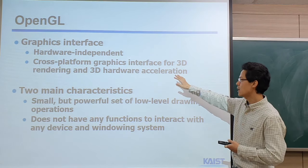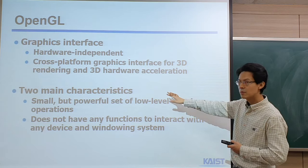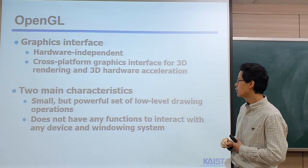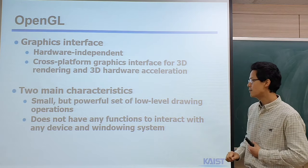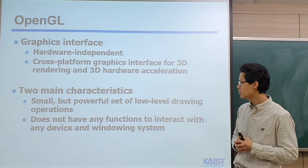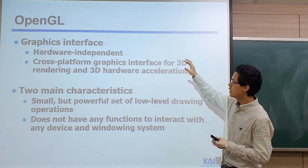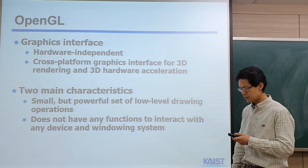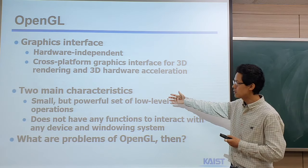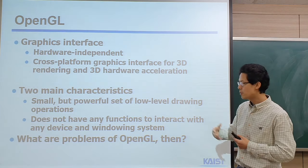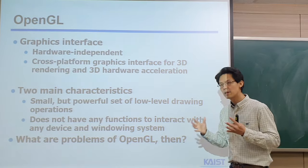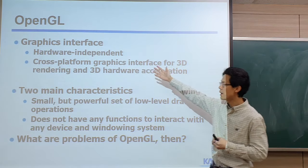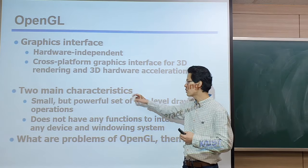The design philosophy of OpenGL is based on two main characteristics. It aims for a small but powerful set of low-level drawing operations. OpenGL provides fundamental operations related to rendering, but it does not have any functions to interact with device-dependent or Windows-dependent systems, so its main functions can run across different platforms. However, there are potential problems: if you want to support a very complicated rendering function, you may not find the appropriate API from OpenGL, since it mainly provides a small core API.